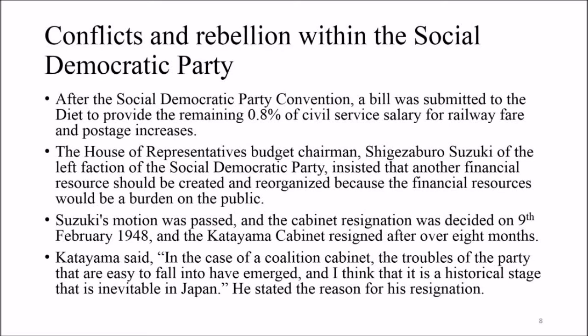Conflicts and rebellion within the Social Democratic Party arose over railway fare and postage increases. The House of Representatives budget chairman, Shigezaburo Suzuki of the Left Faction of the Social Democratic Party, insisted that another financial resource should be created and reorganized, arguing the existing financial resources would be a burden on the public. Suzuki's motion was passed, and the cabinet resignation was decided on 9th February 1948. The Katayama cabinet resigned after over eight months in office.